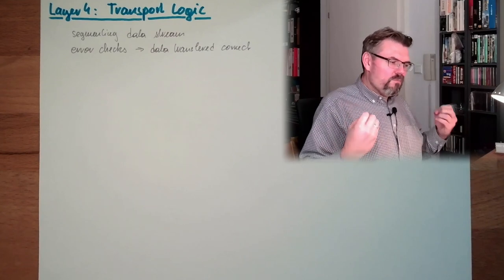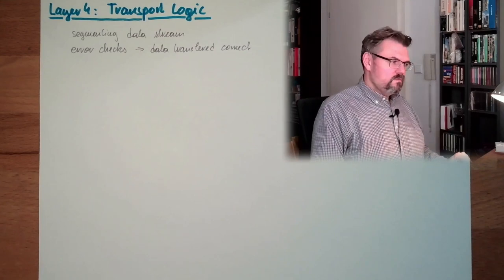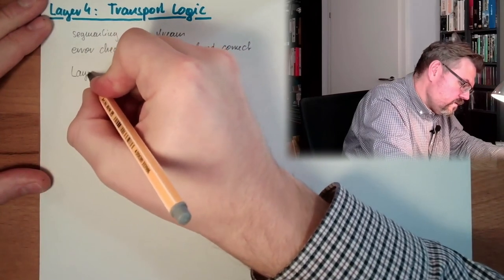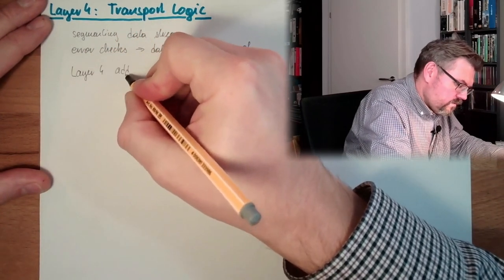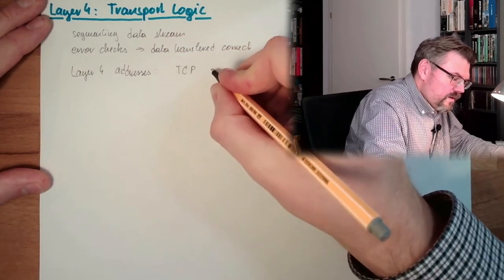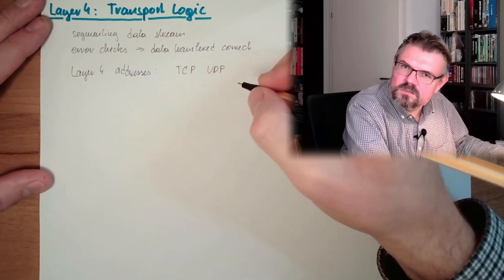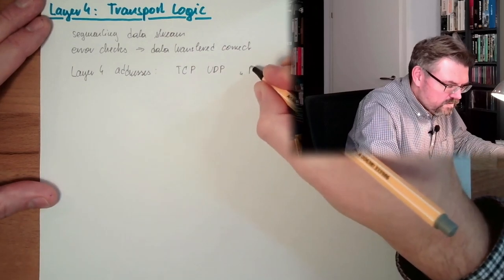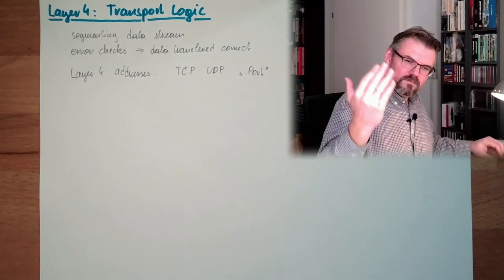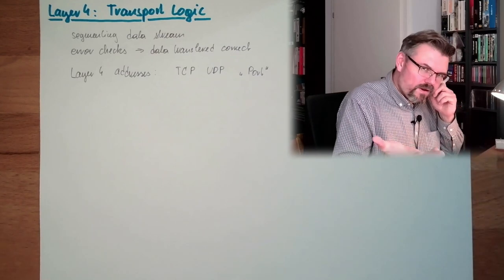The protocol, the layer 4 protocol, is taking care that the whole data is transferred correctly. So, we have layer 4 addresses there. And in TCP and UDP, these are two typical layer 4 protocols, these are called ports. I'm sure you have already heard. Port. Certain port. This is the layer 4 address, actually.